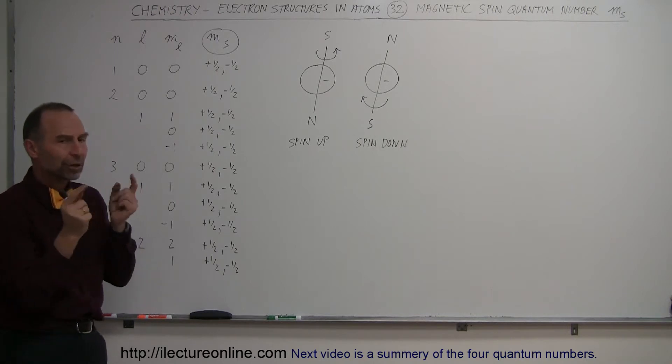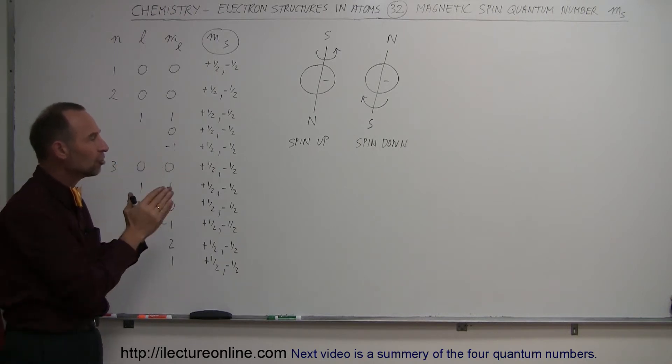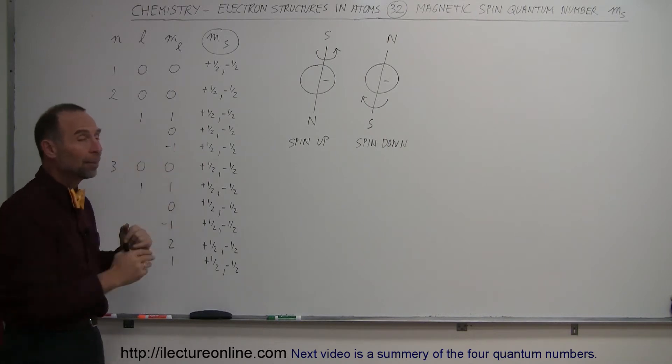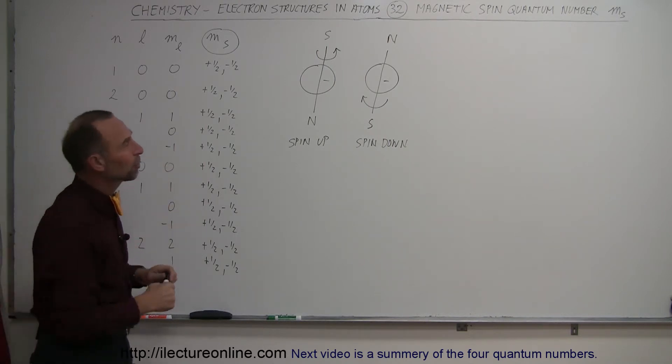Therefore, two electrons can exist in the very same location if one is spin up and the other one is spin down. It is this property that allows two electrons per orbital.